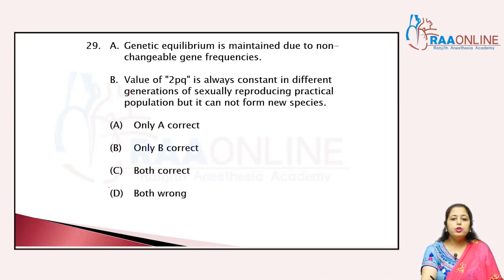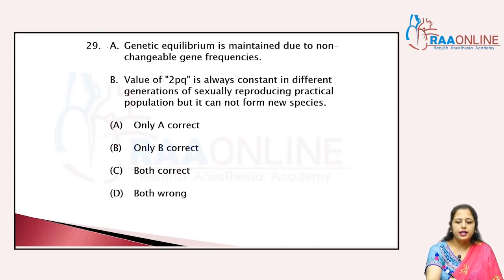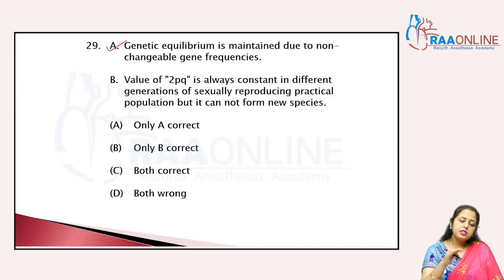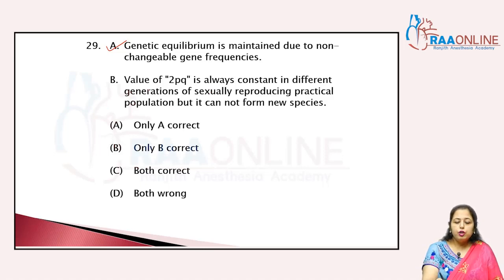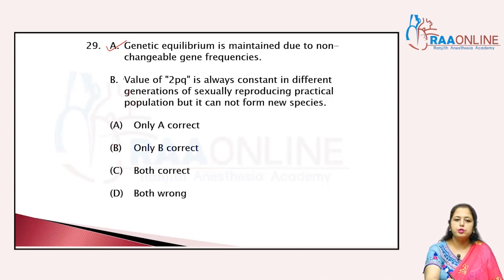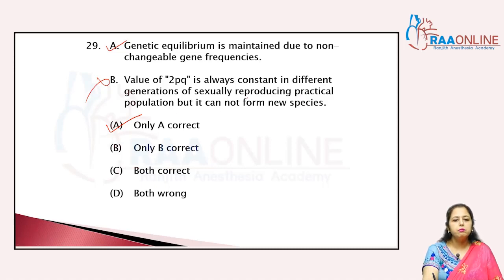Genetic equilibrium is maintained due to non-changeable gene frequency — yes, it is correct. We know that genetic equilibrium maintains the gene pool; there are no changes in gene frequencies. The value of 2pq is always constant in different generations of sexual reproduction. A practically ideal population cannot form neo-species — that is wrong. So the answer is only A, related to the Hardy-Weinberg principle.